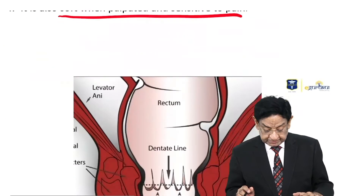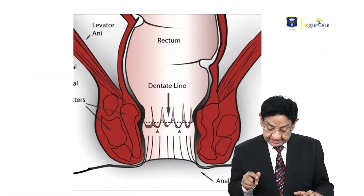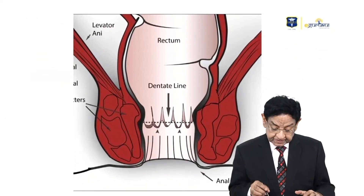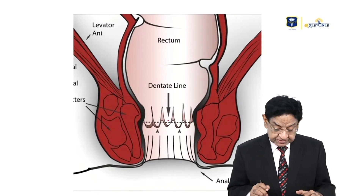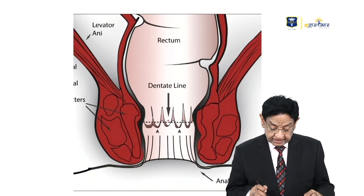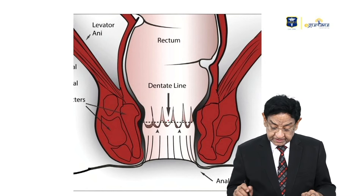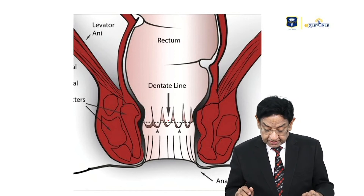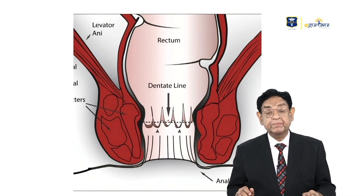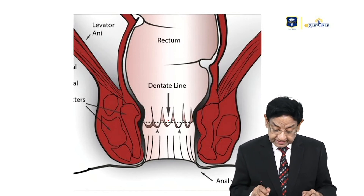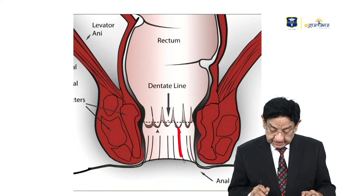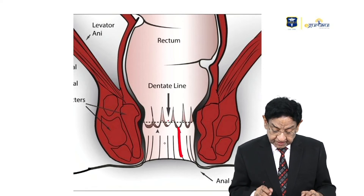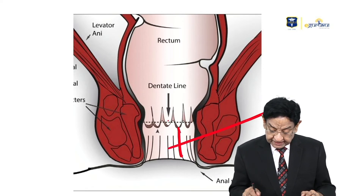The anoderm is soft when palpated and sensitive to pain. In the diagram, you can see the dentate line in the lower part of the anus, and the anoderm extending to the anal verge.